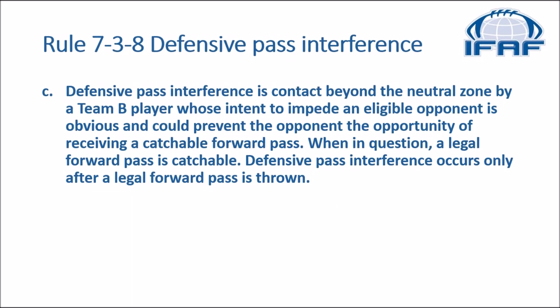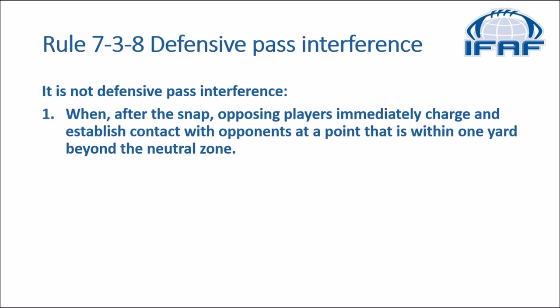In the rulebook we go to rule 7-3-8, defensive pass interference. Defensive pass interference is contact beyond the neutral zone by a team B player whose intent to impede an eligible opponent is obvious and could prevent the opponent the opportunity of receiving a catchable forward pass. When in question, a legal forward pass is catchable. Defensive pass interference occurs only after a legal forward pass is thrown. It is not pass interference when, after the snap, opposing players immediately charge and establish contact with opponent at a point that is within one yard beyond the neutral zone.